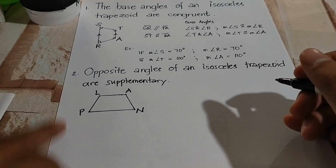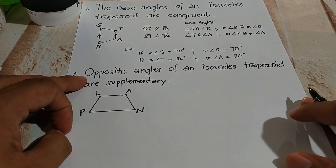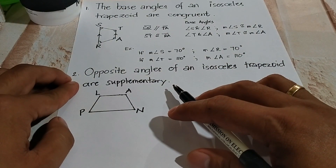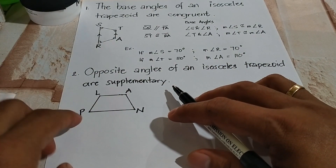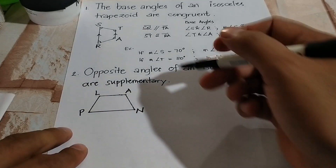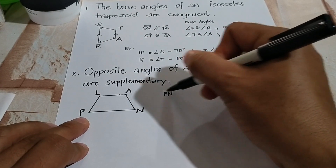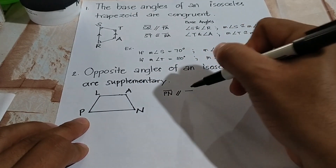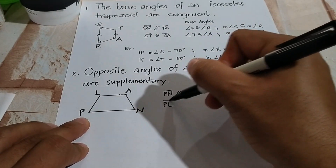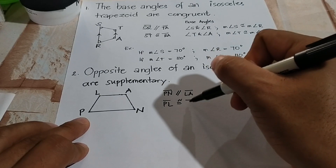Now let's move on to theorem number 2, stating that opposite angles of an isosceles trapezoid are supplementary. We have trapezoid PLAN, where segment PN is parallel to segment LA, and segment PL is congruent to segment NA.